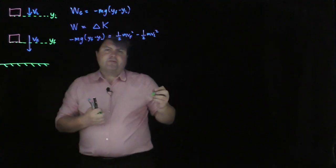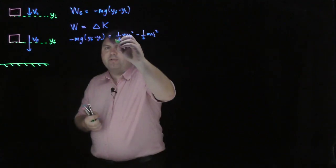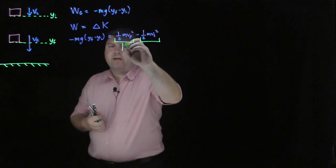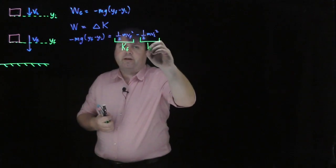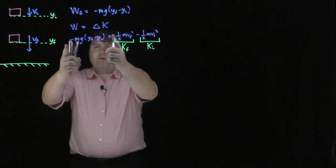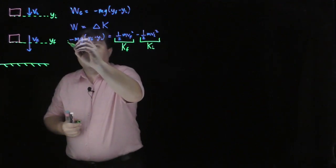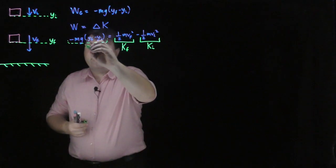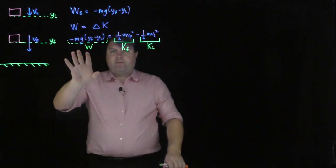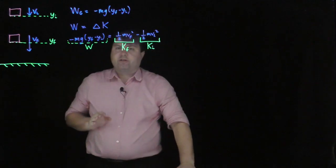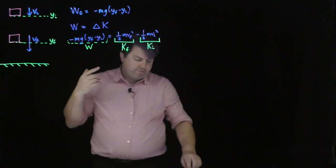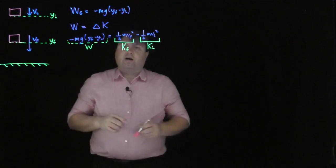What we've seen so far is that we've started to talk about each of these individual terms as kinetic energies — this being the final kinetic energy, this being the initial kinetic energy — whereas we've treated all of this as just the work. One thing we can do instead of having work on one side and kinetic energies on the other is to rearrange so that we only have the final objects on each side.